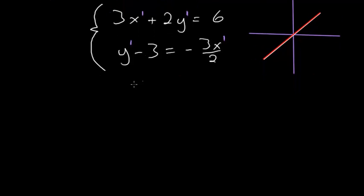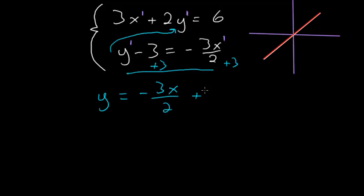So to do that, I'll take this second equation here and just solve for y and then plug that value of y into the y in the upper equation. So from the second equation, to solve for y, I just need to add 3 to each side. So y is minus 3x over 2 plus 3.